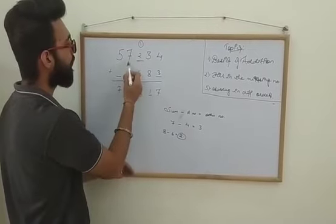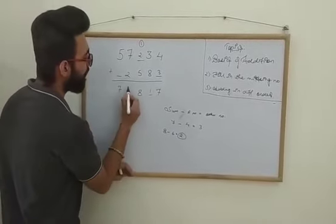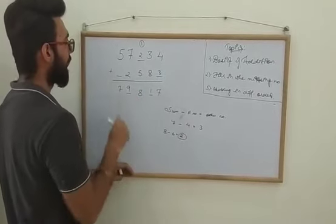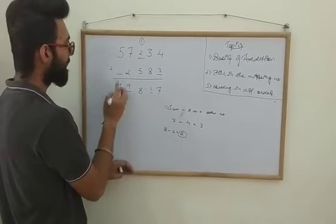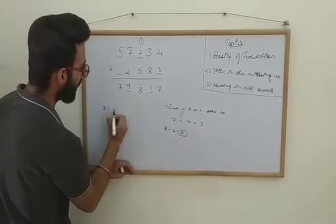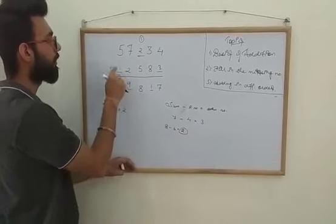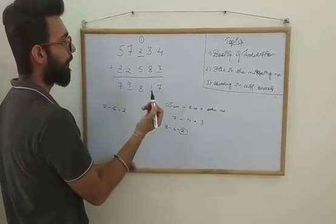Now this number: 5 and 7. 7 and 2 is 9, so we can write 9 here. And now the last number, that is 5. Again 7 is given. 7 minus the number which is given, 5, equals 7 minus 2. So the number which is missing is 2.